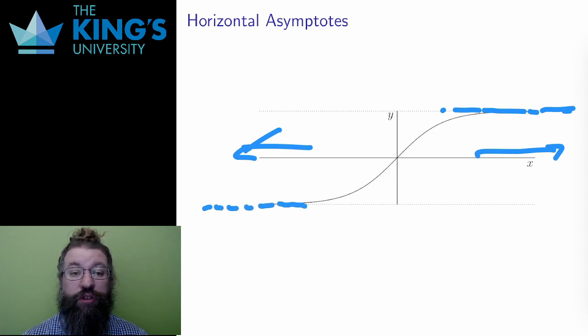Vertical asymptotes from last week presented places where the function grew rapidly without bound, shooting up towards infinity. Horizontal asymptotes are sort of the opposite. They present places where the function slowly levels off as the input goes on and on, either in the positive or negative directions.